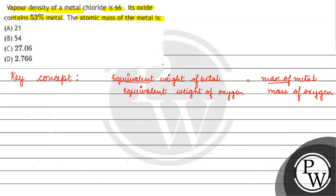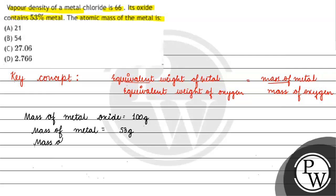If we consider mass of metal oxide as 100 grams, then mass of metal is 53% of 100, which is 53 grams. And mass of oxygen is 100 minus 53, which gives us 47 grams.